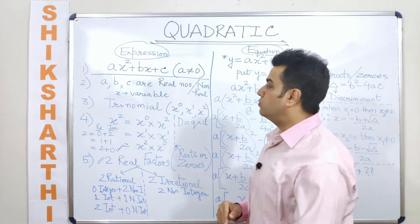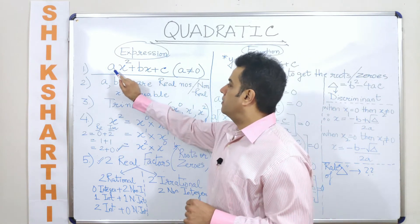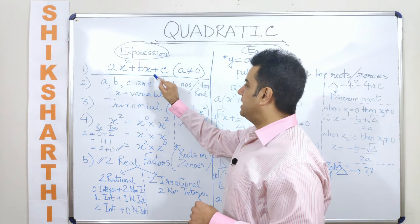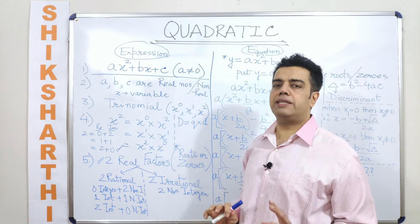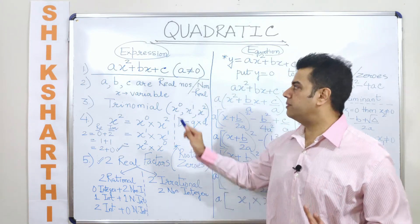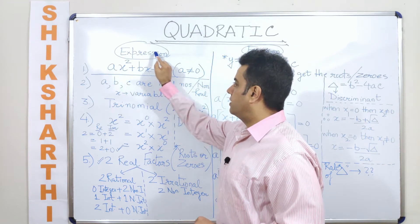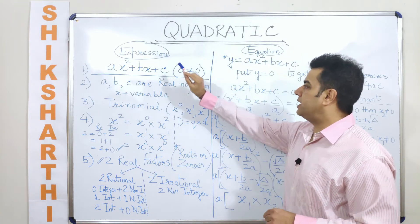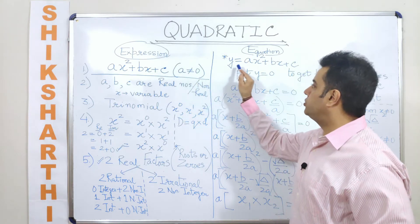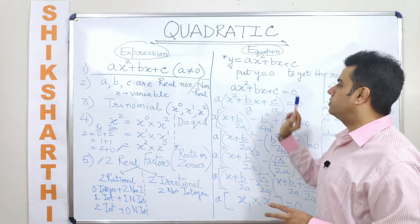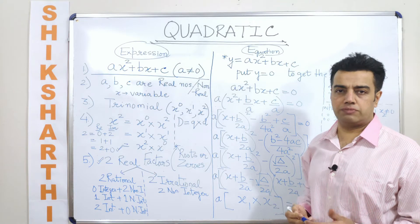Just to make it as a specific mention, if I write ax squared plus bx plus c without writing an equal to sign — if I merely write it like this — that means it is a quadratic expression. And the moment I equate an expression to another variable or equal to zero, it becomes a quadratic equation.